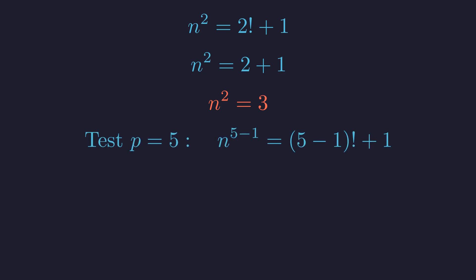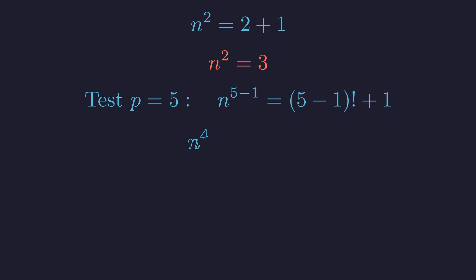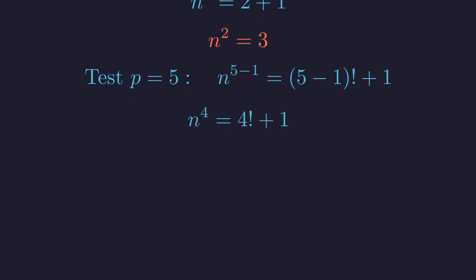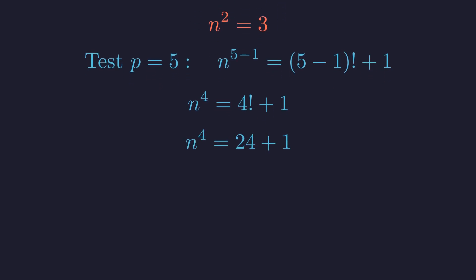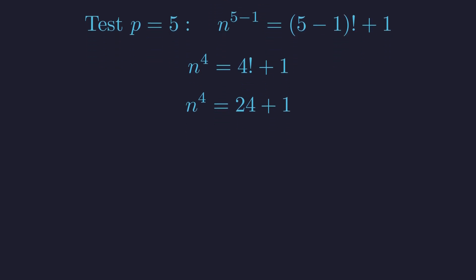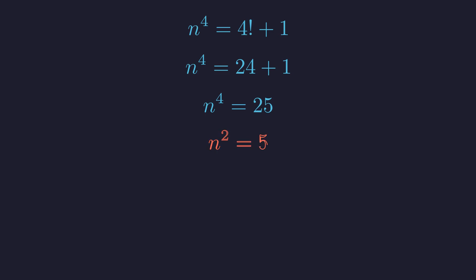What about p equals 5? We get n to the fourth equals 4 factorial plus 1. 4 factorial is 24, so n to the fourth is 24 plus 1. This simplifies to n to the fourth equals 25. Taking the square root, n squared must be 5, which again has no integer solution. It seems we're not finding any more solutions.